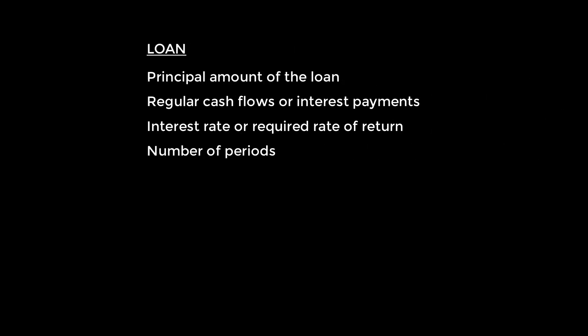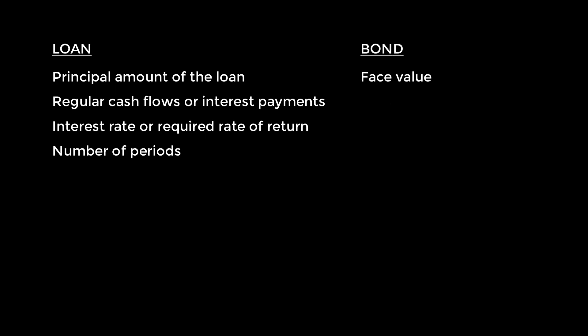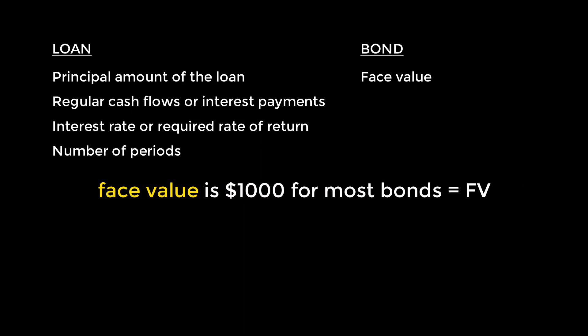Bonds have a lot of associated jargon, but at the end of the day, they're just another kind of loan. A useful way to decipher the language of bonds is to associate it with roughly equivalent terms that we're already familiar with. Every loan has a principal amount — the amount that was actually borrowed and must be repaid when the loan matures. The face value of a bond is like the principal of a loan. For bonds, it's generally always $1,000, and unless a problem says otherwise, we stick with that assumption.